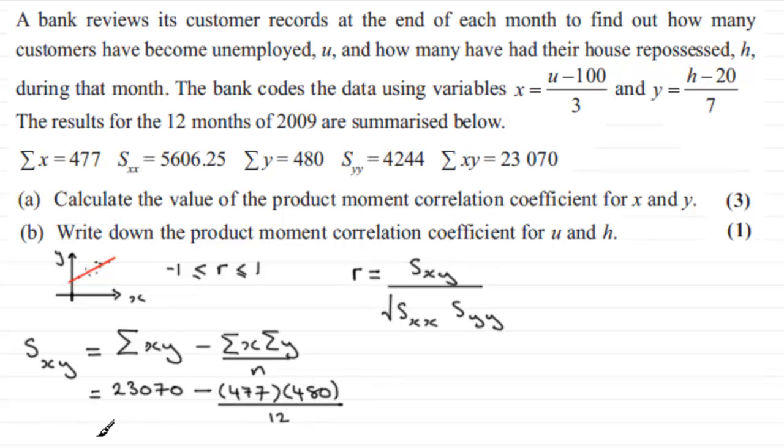If you work this out, we end up with 3,990. So now we're in a position to work out what r is. r is going to be equal to S_xy, which we've just worked out, 3,990.